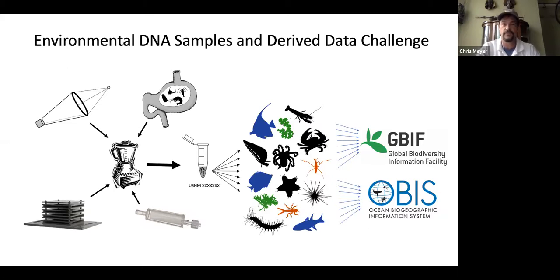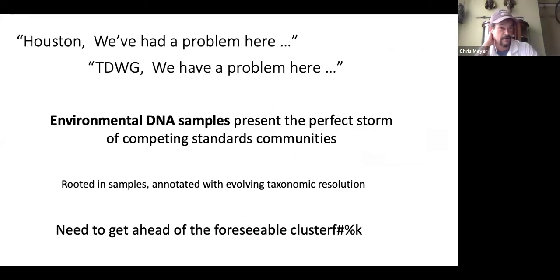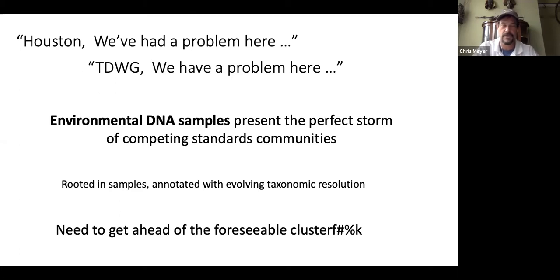So again, it's this workflow that we're trying to map and capture. I think environmental DNA samples present this perfect storm of competing standards communities. It's rooted in these samples, but it's going to be annotated with this evolving taxonomic resolution, and each step of the process is going to affect the false positive and false negative estimations of occurrence records. So I think we just need to get ahead of that.